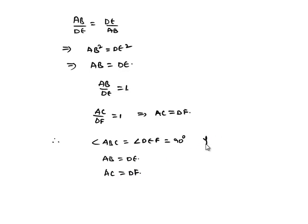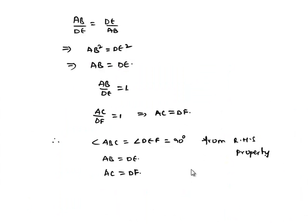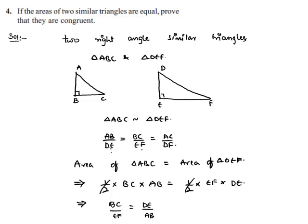Therefore from RHS property we can say that triangle ABC is congruent to triangle DEF. Therefore two similar triangles with same area will be congruent.